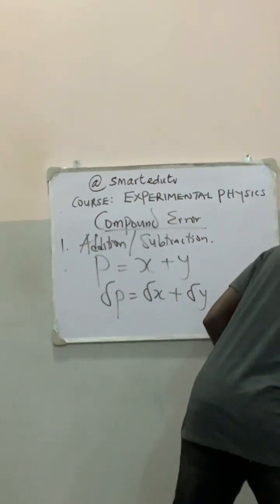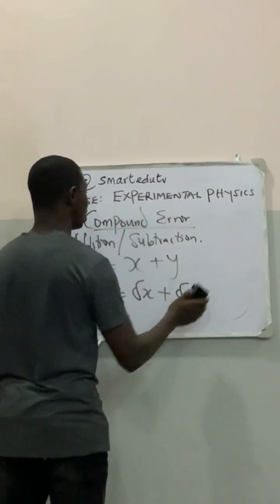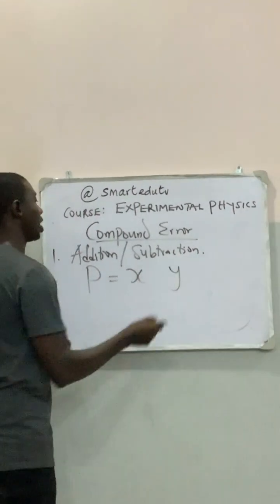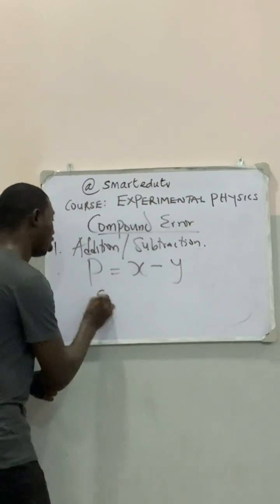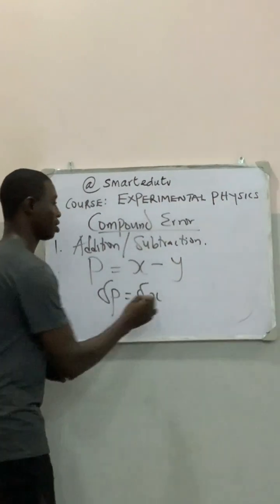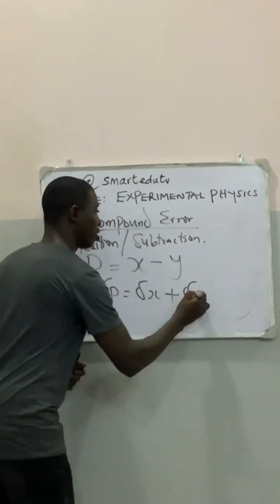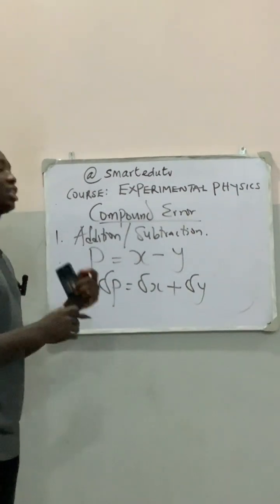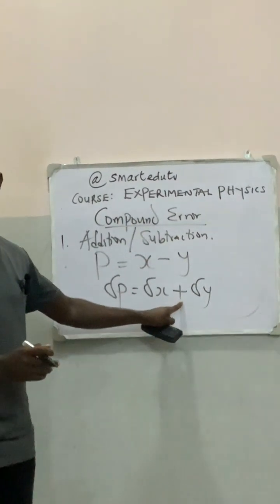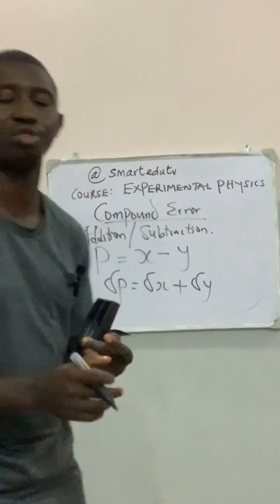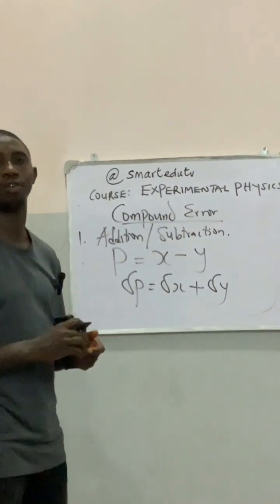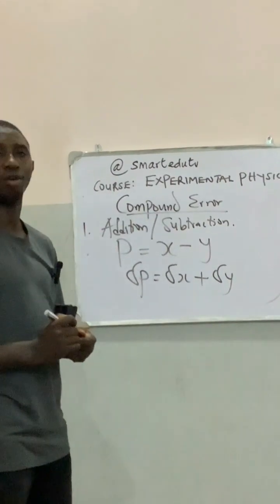Similarly, in terms of subtraction, if P equals X minus Y, the error in P is equal to error in X plus error in Y. What we notice is that either it is addition or subtraction, errors are always added — irrespective of the operation. In experimental physics, we don't subtract errors; errors are always added.